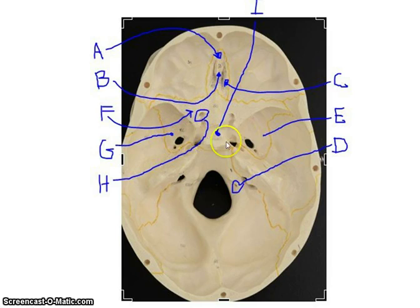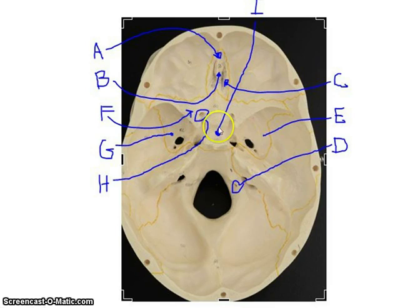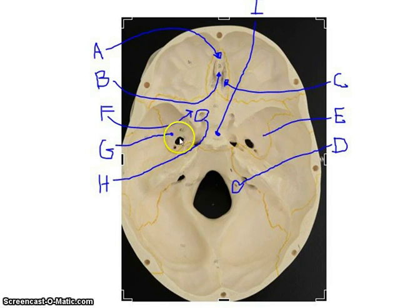This bone here with a butterfly-like shape is the sphenoid bone. You have wings — on top you have the lesser wings, and on the bottom you have the greater wings. You have the optic foramina where the optic nerve comes through. And you also have this area called the sella turcica, which is where the pituitary gland sits.